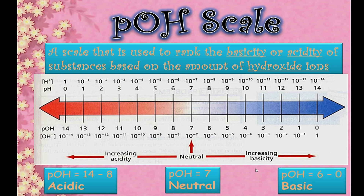On the pOH scale, a value of 7 is neutral. If the pOH value is between 14 and 8, the solution is acidic. If the pOH value is between 6 and 0, the solution is basic in nature.